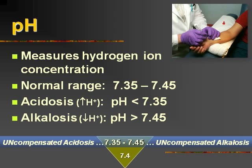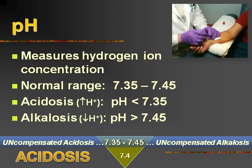If we don't have enough hydrogen ions circulating around in our blood, then this is going to cause an alkalosis, and our pH will go up above 7.45. So if our pH is less than 7.35, then this is going to be an uncompensated acidosis. If it's greater than 7.45, then this is going to be an uncompensated alkalosis.